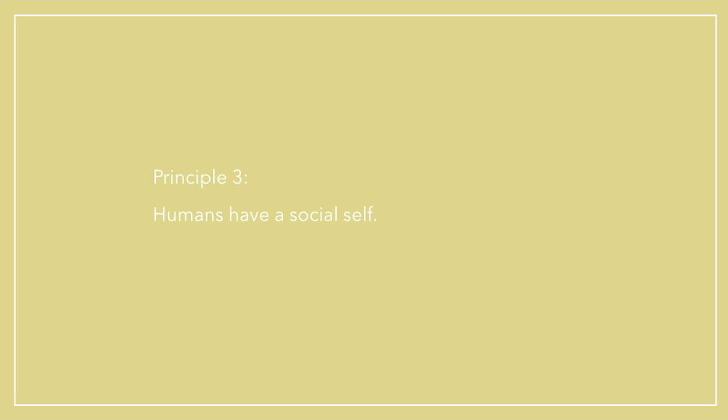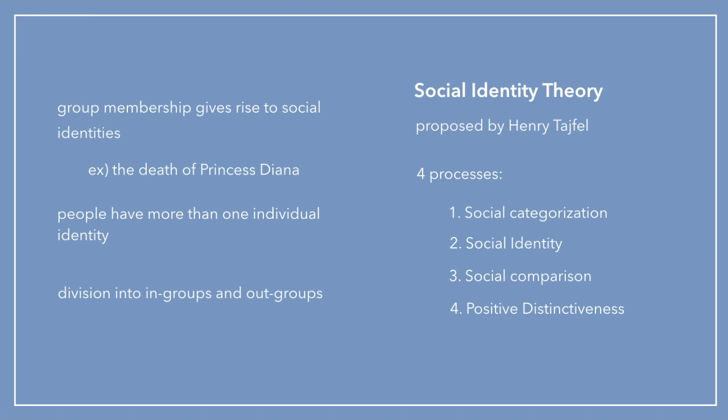Principle three states that humans have a social self along with their personal identity — they have group membership. Group membership gives rise to social identities. For example, in the death of Princess Diana, people didn't know her person to person, but many mourned as if it were the death of a family member — that is their social identity as part of a country. People also have more than one identity; they can belong to the jock group, the nerd group, the environment club, or MUN — each with their own identity.